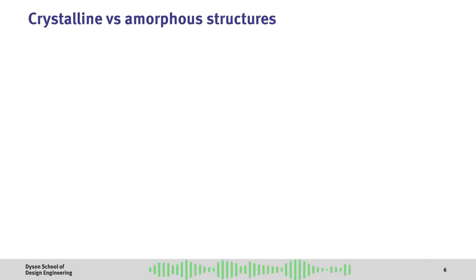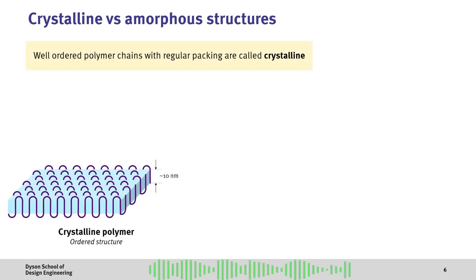Another key concept in polymer science is understanding whether the structure is crystalline or amorphous. What do we mean when we say this? When polymer chains are well ordered with regular packing, we call these crystalline. This occurs more in linear chains.